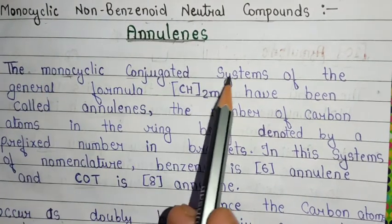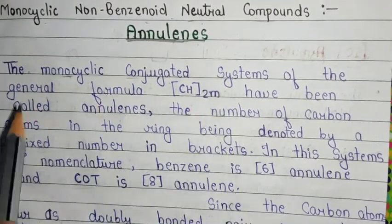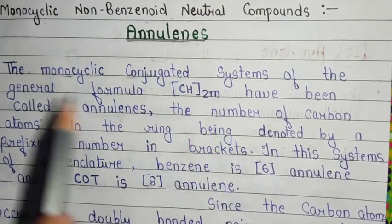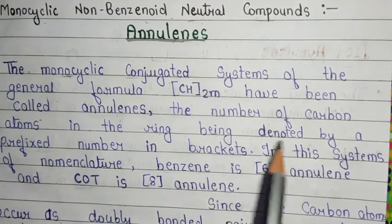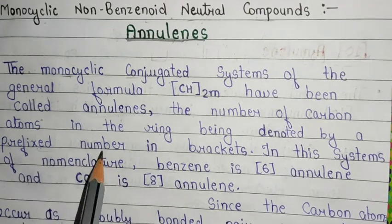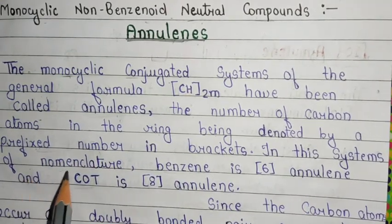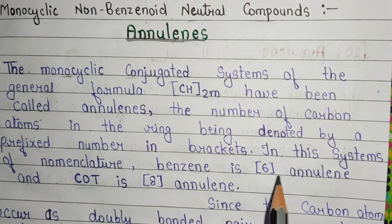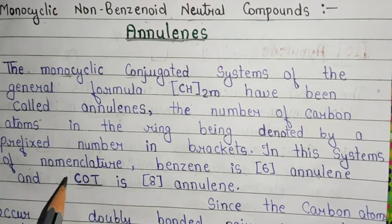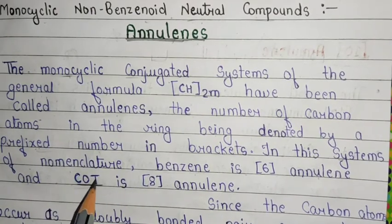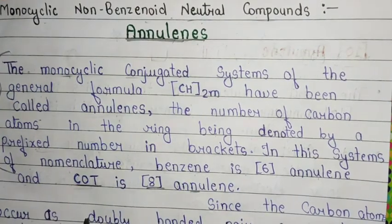The monocyclic conjugated system of the general formula (CH)₂ₘ have been called annulins, the number of carbon atoms in the ring being denoted by a prefix number in brackets. In this system of nomenclature, benzene is [6]annulin and COT is [8]annulin. So this is the basic introduction of annulin.